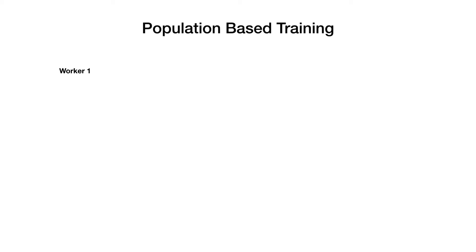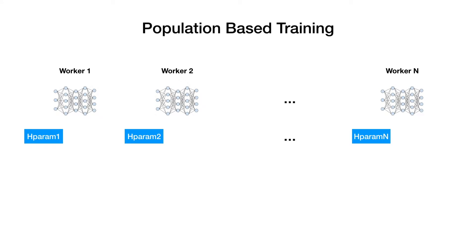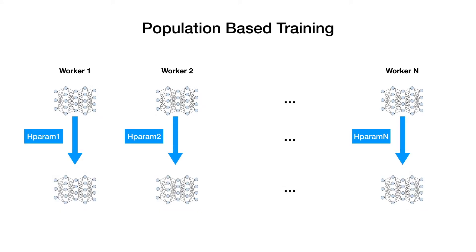Suppose you have n workers, and every worker starts by sampling a set of hyperparameters and then trains the model with the corresponding hyperparameters for a few steps. We call this the first generation. Please notice at this point none of the models is converged, but the PBT algorithm is going to intervene in the training process to continue to the next generation.